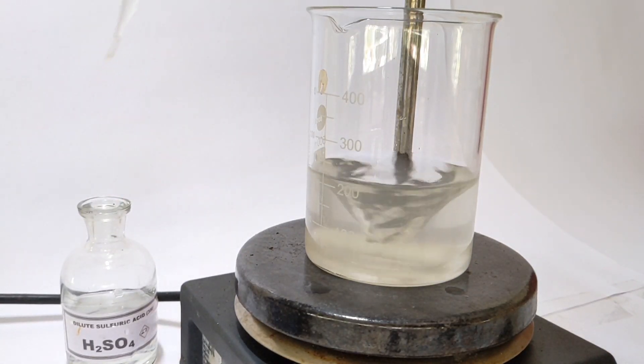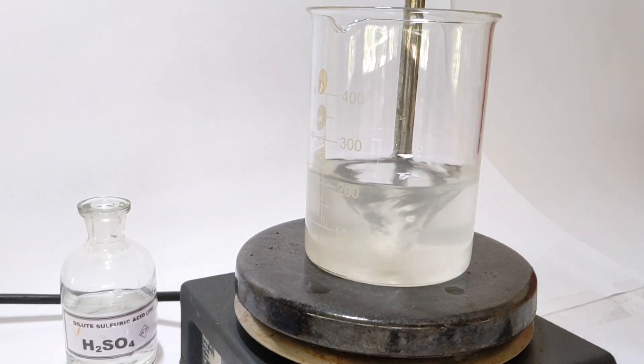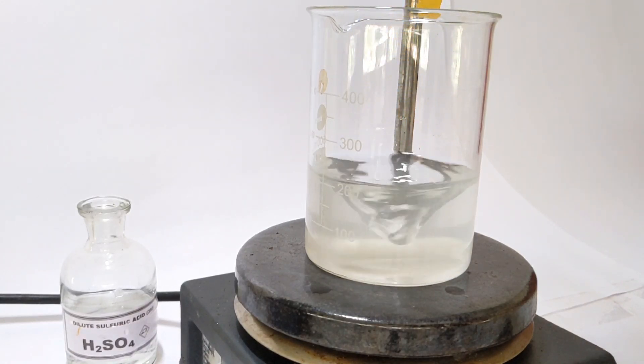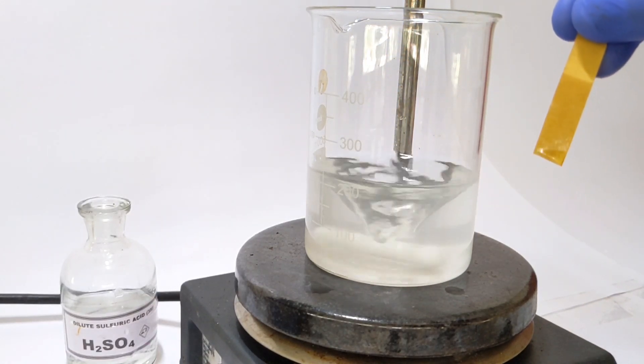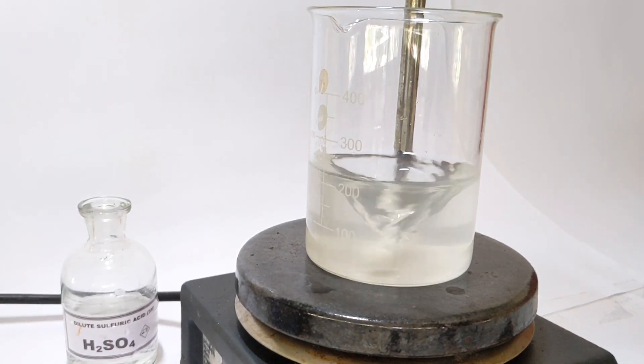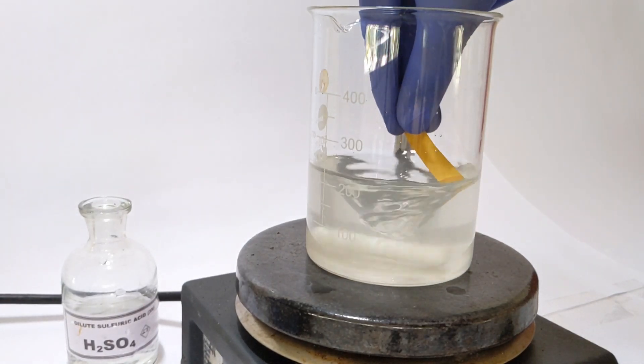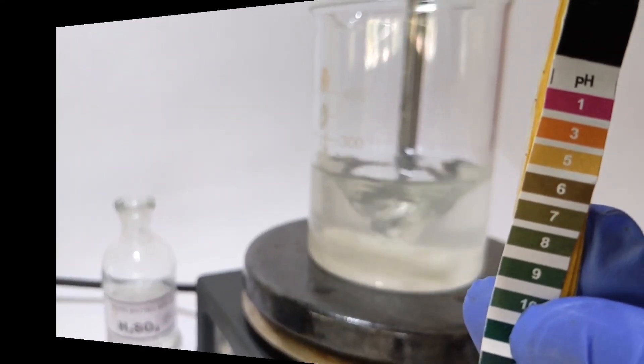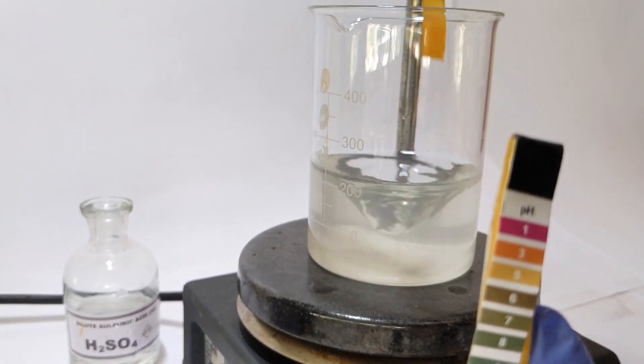A pH paper was used for that. Initially you can see the pH paper does not have any color change, indicating the pH is around 7, so more acid was added. Now the pH paper shows an orange color which is approximately around 4. You can very well see that comparison with the color chart.